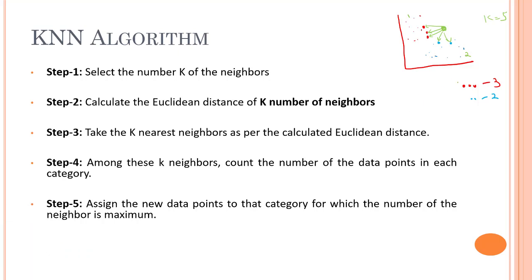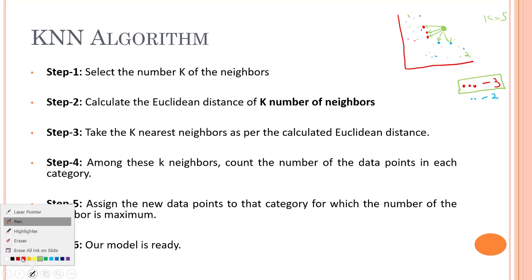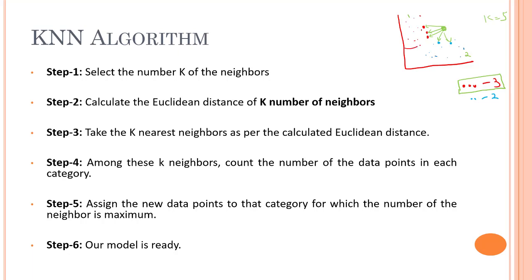So our new point belongs to the red category, and that's the completion of our KNN model. I will assign this new point as belonging to the red area.